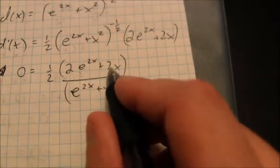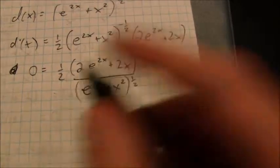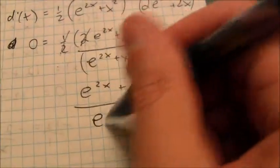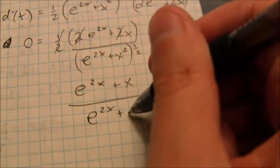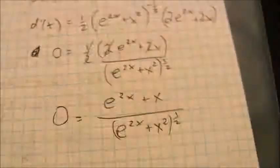Notice that I could factor a 2 out of both of these values, which would cancel with the 2 in that one-half. So I'm going to go ahead and cancel all of that. And at this point I end up knowing that e to the 2x plus x over e to the 2x plus x squared raised to the one-half power is equal to 0.